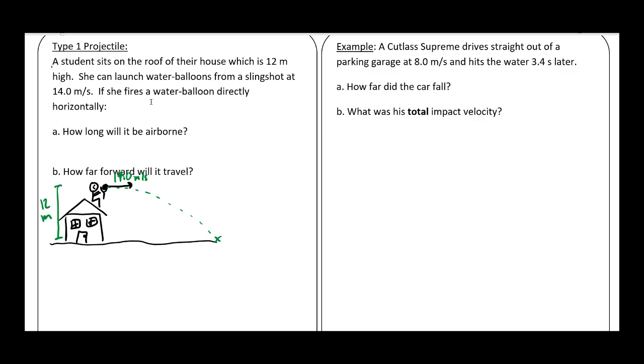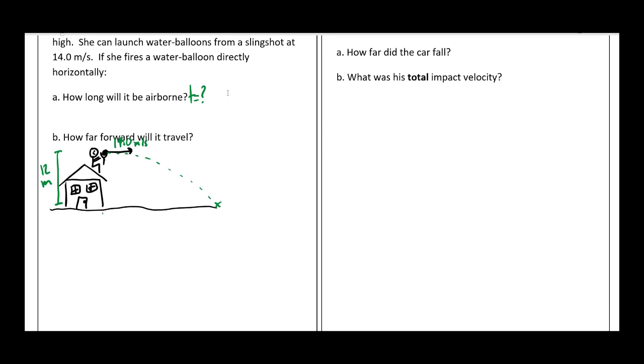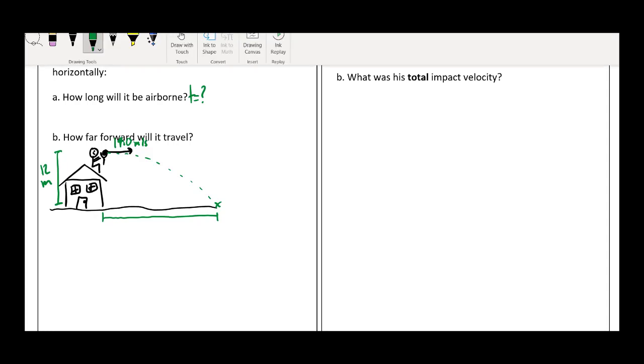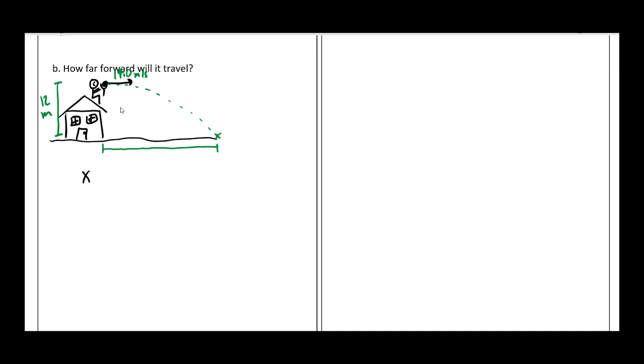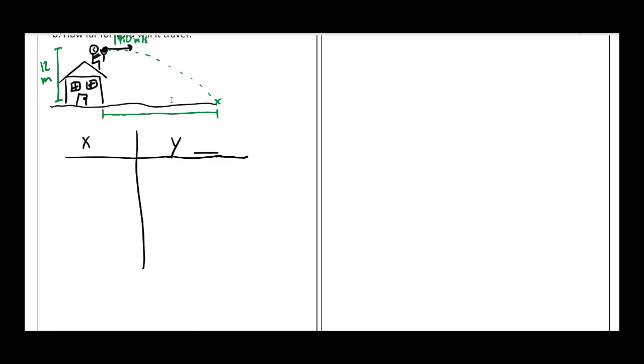We're looking for two things. How long will it be airborne? So that's asking for T. And how far forward it will travel. How far forward it travels would be this right here. What variable would we call that? We'll talk about it in a second. Now, the way I want you to set these up is because our X and Y components are independent, we're going to make a little chart here. X on one side, Y on the other. We'll probably need more space on the Y side because Y is just more complicated.